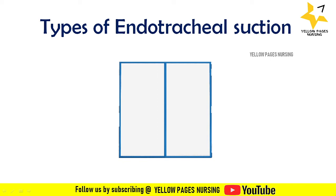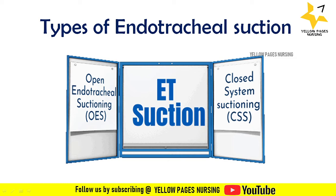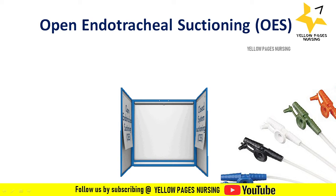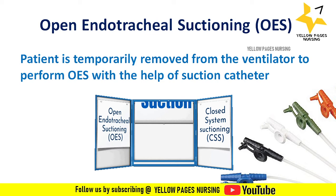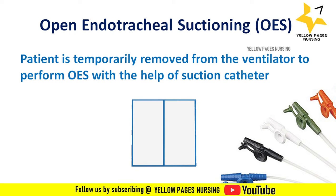There are two types of suctioning: open endotracheal suctioning (OES) and closed system suctioning (CSS). In open endotracheal suctioning, the patient is temporarily removed from the ventilator to perform suctioning with a suction catheter. When disconnecting the breathing circuit, there may be chances of desaturation, hypoxia, and cross-infection.